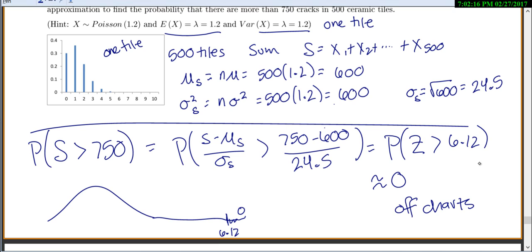Basically like a 0% chance of getting more than 750 cracks. And again, we did start with a discrete distribution, but because n was so large, we can just use our central limit theorem, and we can use the normal distribution that is continuous.